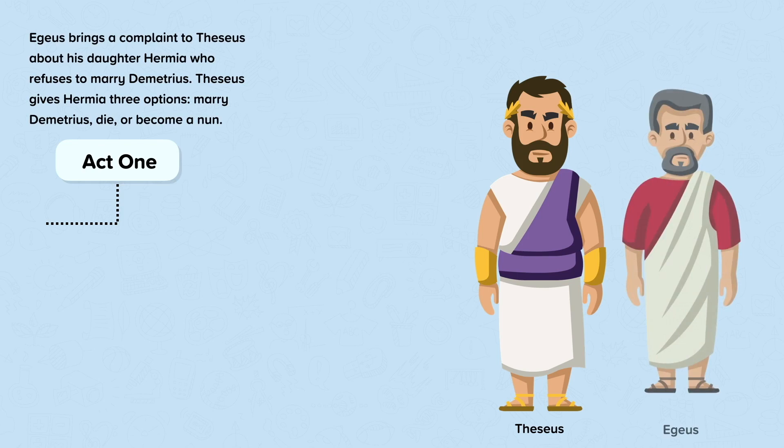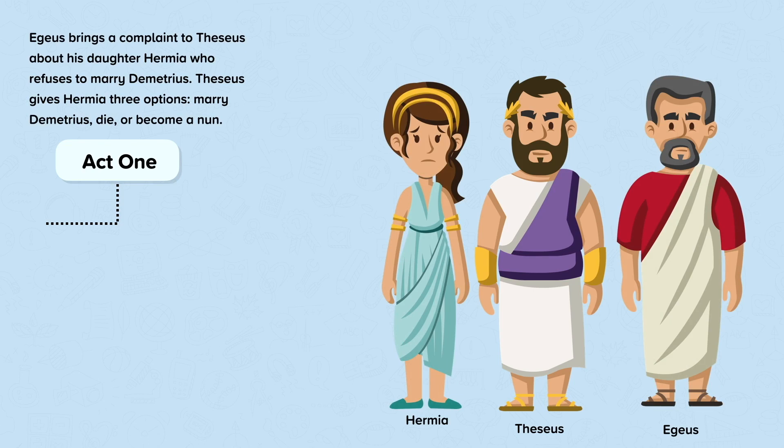Theseus gives Hermia three options: marry Demetrius, die by execution, or become a nun.